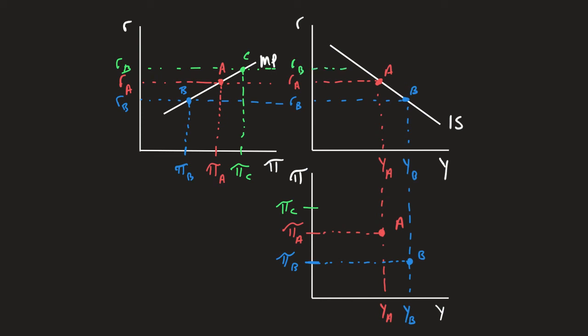This higher level of the real interest rate would then move up and to the left on my IS curve. So we now have a higher level of inflation associated with this lower level of output.